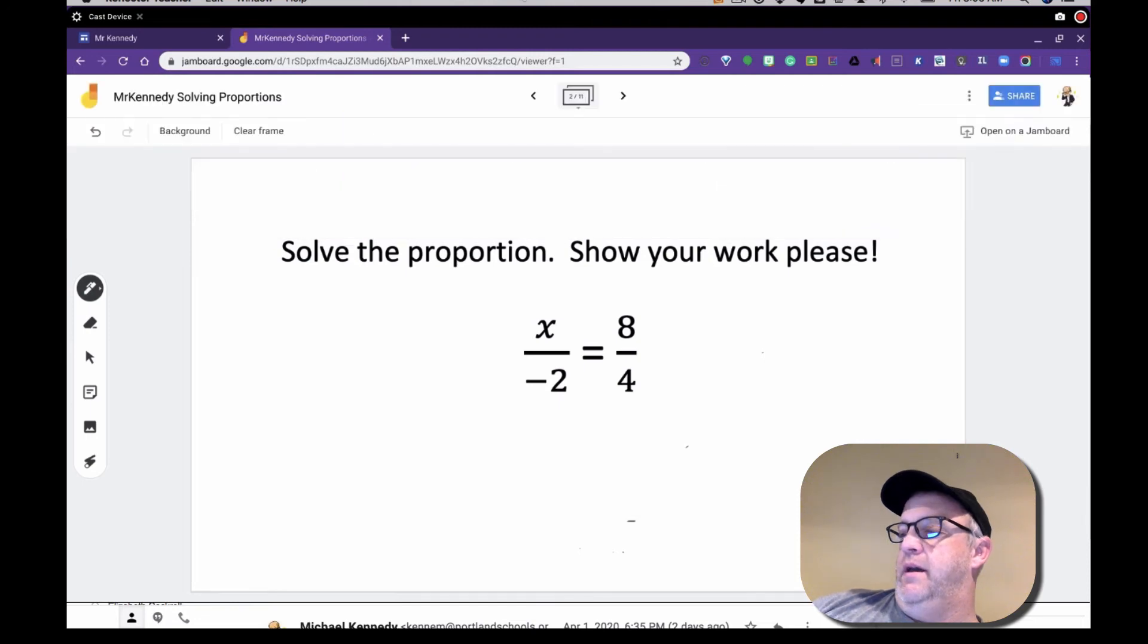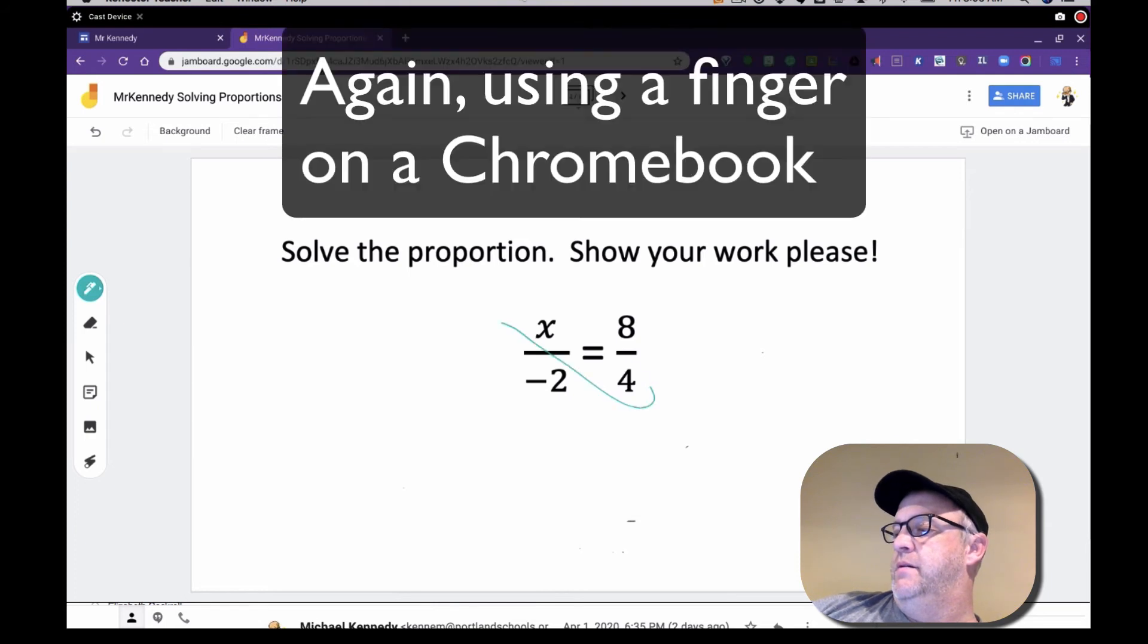Same process. If I want to use a different color I can change the color of my pen. So now I have negative 2 times x, 8 equals 4 times x. That's negative 16 equals 4x.